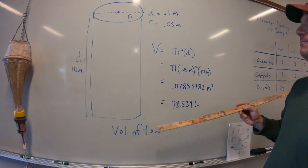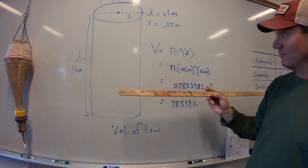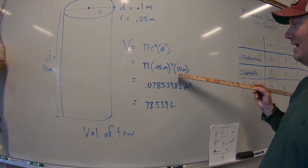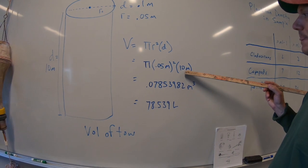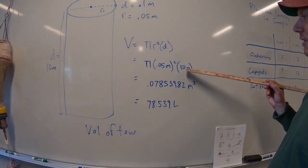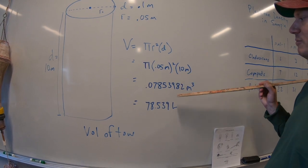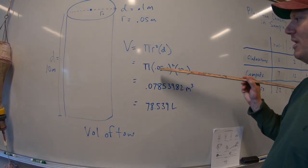We multiply it by d, the depth or the distance of the tow. That's 10 meters, right? So pi r squared times d, which is the distance of the tow. We want to keep everything in meters. So we'll write meters times meters times meters is meters cubed. So you multiply this all out.